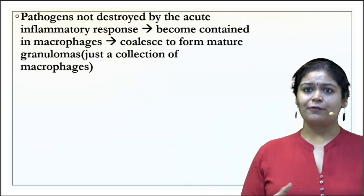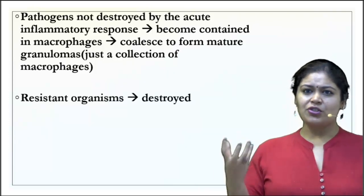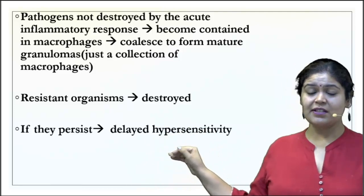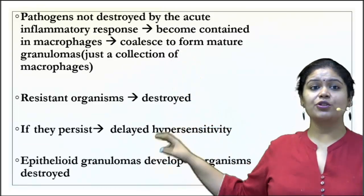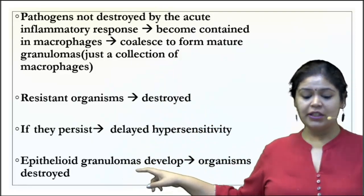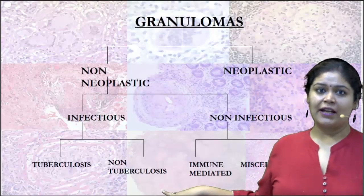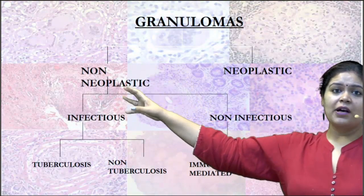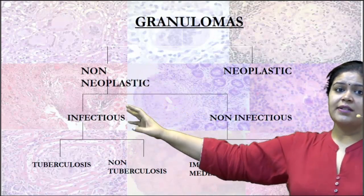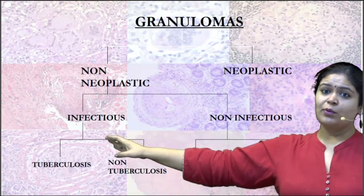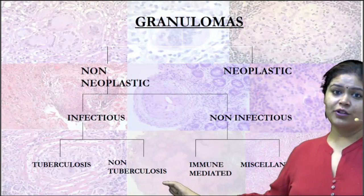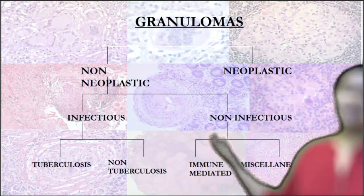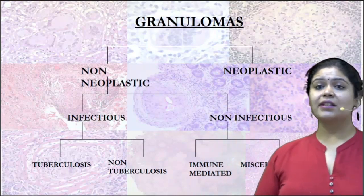Pathogens not destroyed by the acute inflammatory response become contained in macrophages, forming a collection we call a mature granuloma. When resistant organisms persist, this gives rise to a delayed hypersensitivity reaction, at which point mature granulomas turn into epithelioid granulomas. A simplified classification: granulomas can be neoplastic and non-neoplastic. Non-neoplastic ones can be infectious — classically TB — or non-infectious, including immune-mediated causes, miscellaneous endogenous or exogenous substances, and certain cancers known to have granulomas.